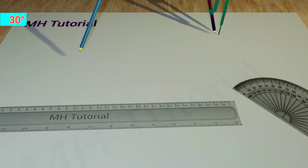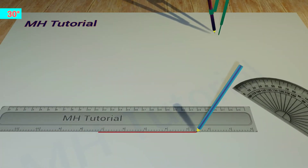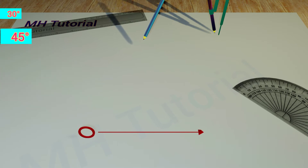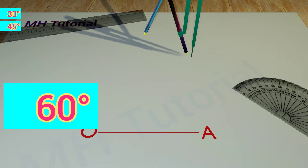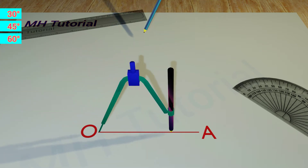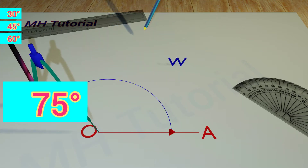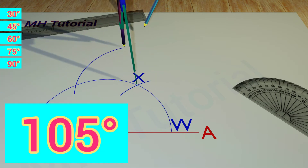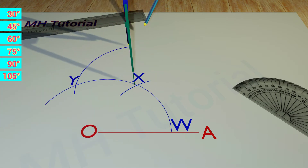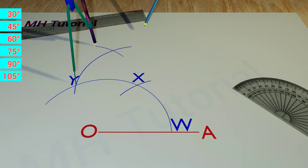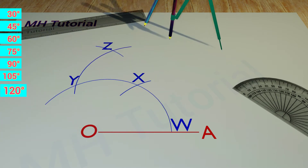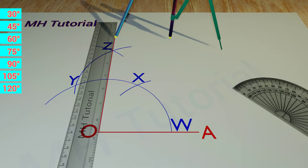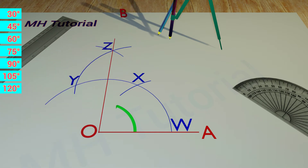How to draw 30, 45, 60, 75, 90, 105, and 120 degree angles using a scale and compass only. Let's start.